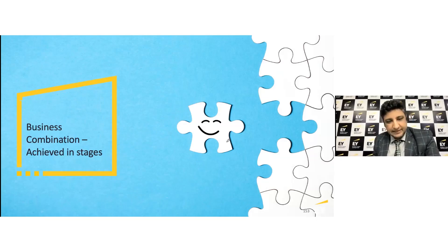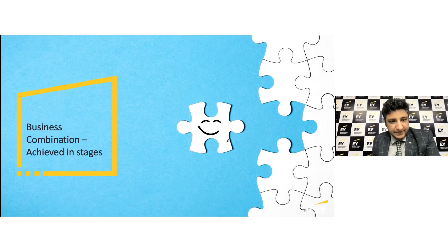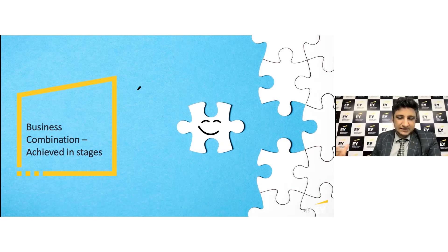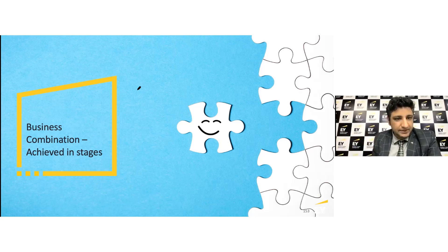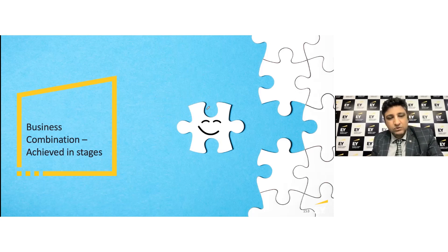Hi everyone. We've already dealt with the different categorizations or types of business combinations and discussed terms including goodwill and non-controlling interest, where NCI can be measured at fair value or under the proportion of net assets method. We also talked about initial measurement and subsequent measurement aspects. So far our discussions assumed you are achieving control or acquiring a business in one go, as if you never had any stake already when you assumed control.